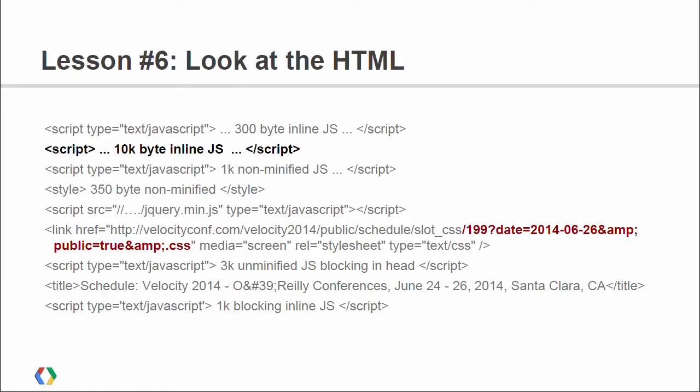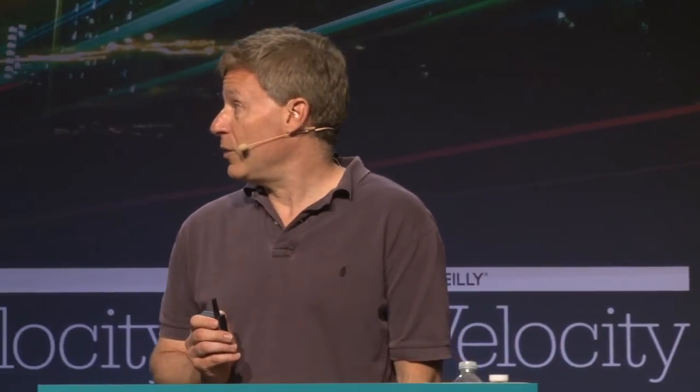Next thing — just look at the HTML. In this case it's really easy: you do view page source and you're greeted with a 10K block of inline JavaScript that has to be parsed and executed before anything else happens in the browser, on your mobile phone. Then you have a bunch of other smaller things and then a CSS file, which is cache-busted and signed to the page so that every page you navigate to, including different pages of the schedule for different days, requires new CSS. This is a good way to make the experience as painful as possible.